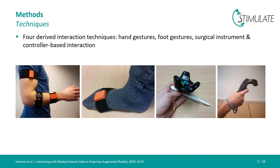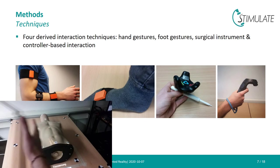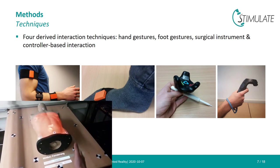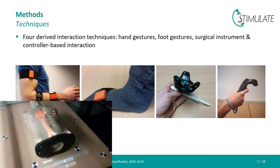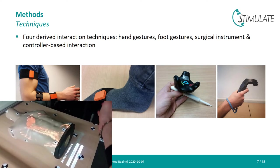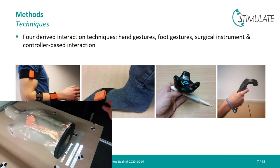We developed four interaction techniques based on related research findings. First, a concept based on hand gestures was implemented using the Myo Gesture Control armband for gesture recognition. Using direct kinematics, data of two inertial measurement units attached to the user's wrist and upper arm was used to calculate the user's relative hand position.